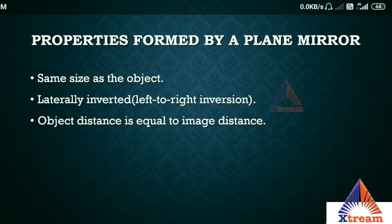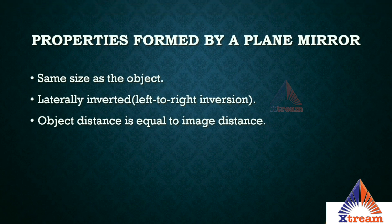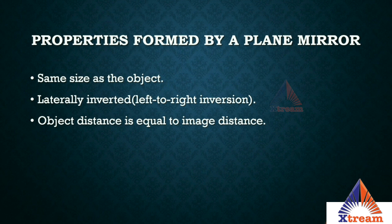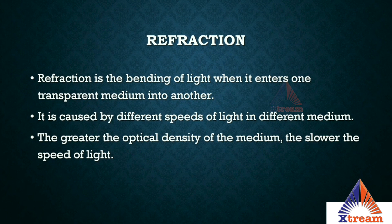The properties of a plane mirror: the image is the same size as the object, laterally inverted, and the object distance equals the image distance. Uses of reflection include: enabling us to see objects, use in periscopes to view enemies on a battlefield from a safe position, medical diagnosis, optical communications, and measuring distances to objects accurately. Reflection is also why we hear the echo of sound.